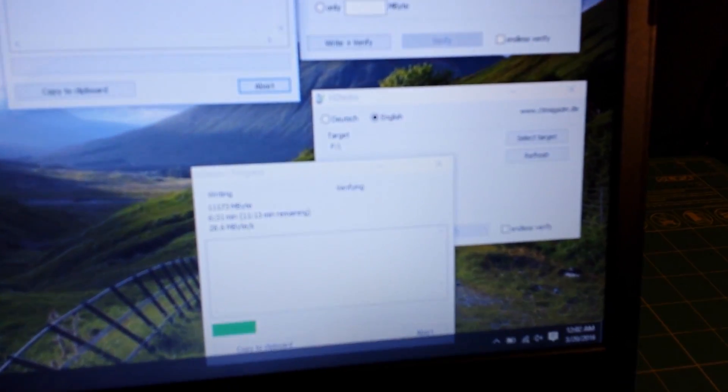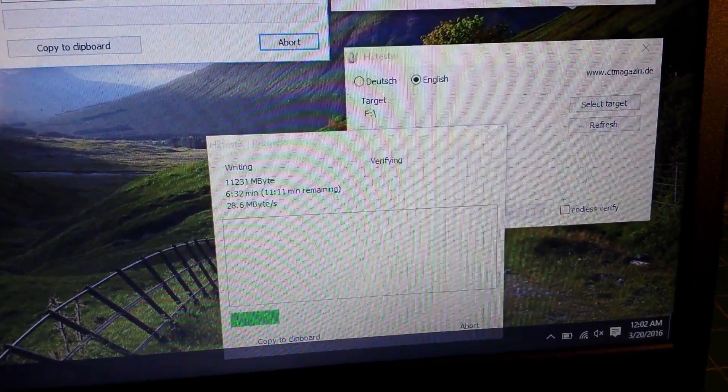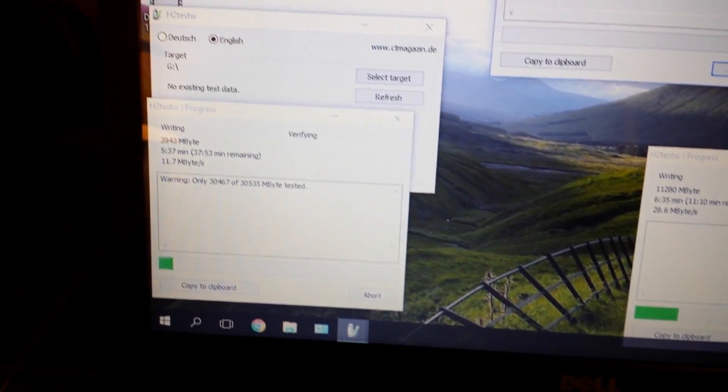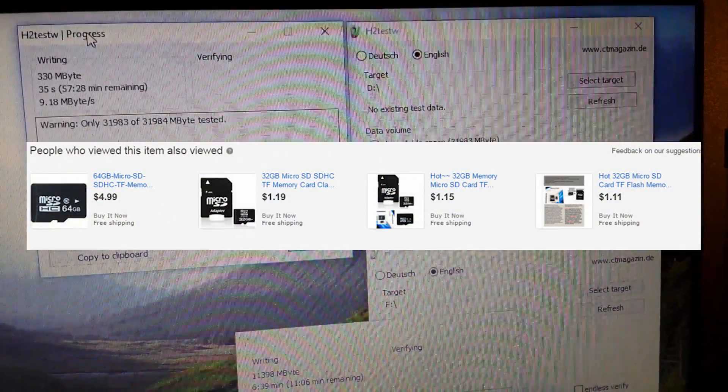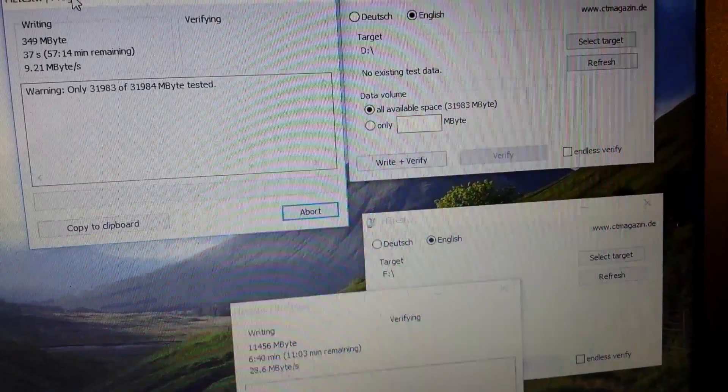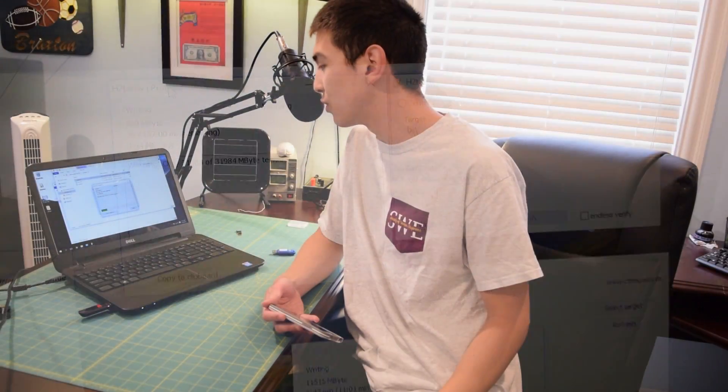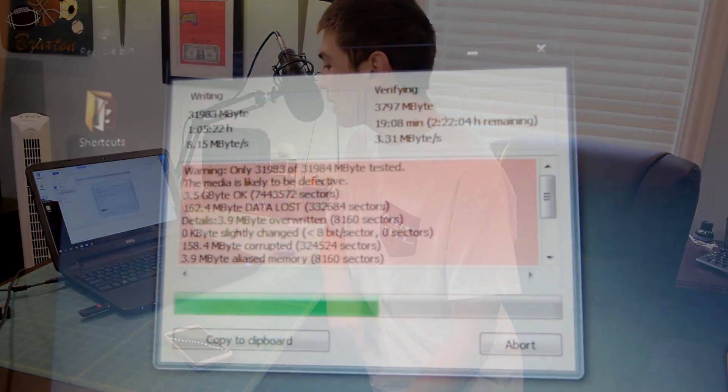I really want to just go on eBay and buy a couple up because they're only like a dollar for a 32 gigabyte. Well, you know, once again, a fake maybe 32 gigabyte SD card and check if any of them are actually real. That might be a cool test. Maybe buy like four or five of them and see if any of them are actually legit. I doubt any of them are, but I am curious. So yeah, this is not a legitimate 32 gigabyte SD card.